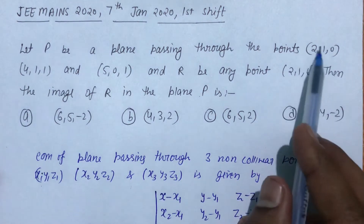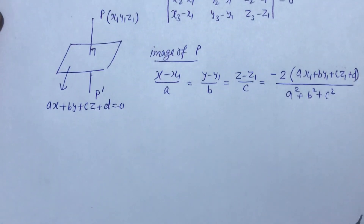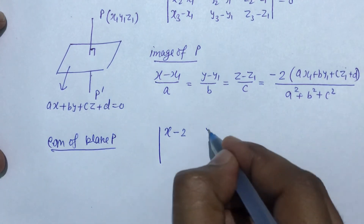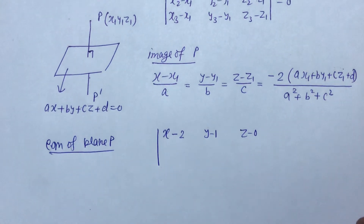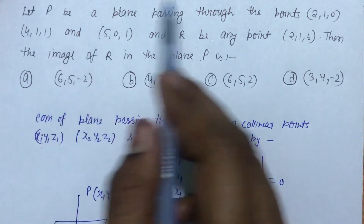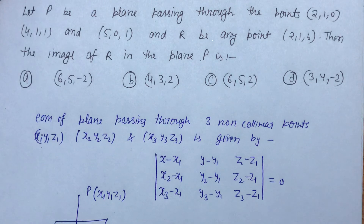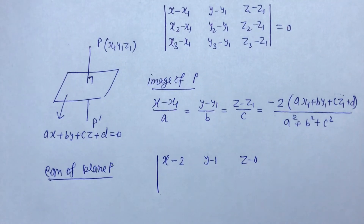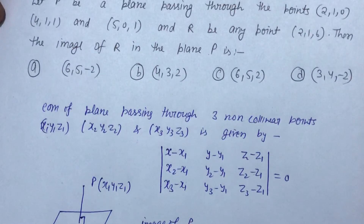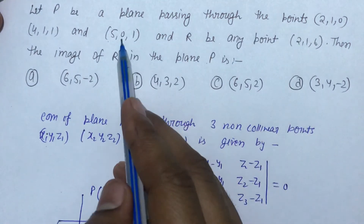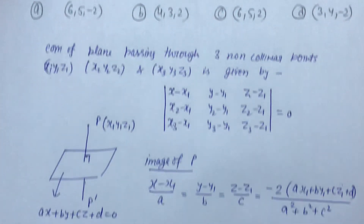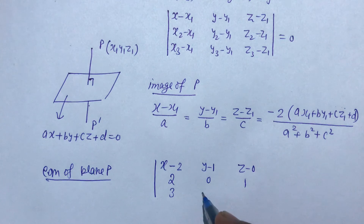To find the equation of the plane, we set up the determinant with first row: (x minus 2, y minus 1, z minus 0). Second row: (x2 minus x1, y2 minus y1, z2 minus z1) = (4-2, 1-1, 1-0) = (2, 0, 1). Third row: (x3 minus x1, y3 minus y1, z3 minus z1) = (5-2, 0-1, 1-0) = (3, minus 1, 1).